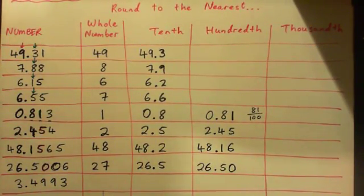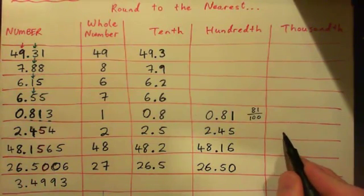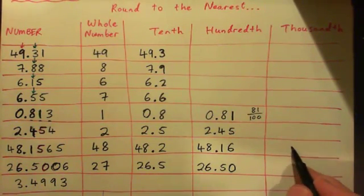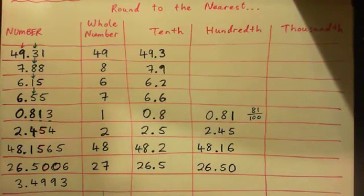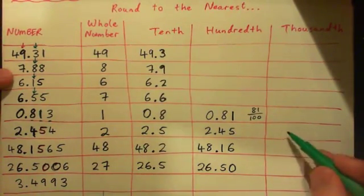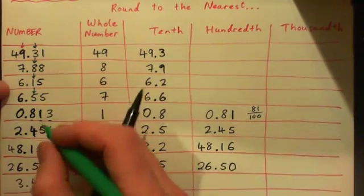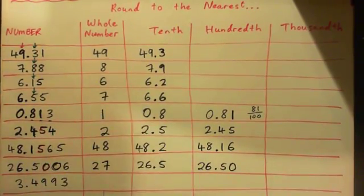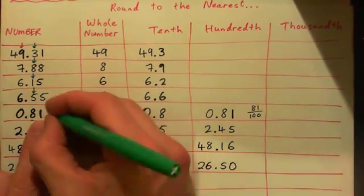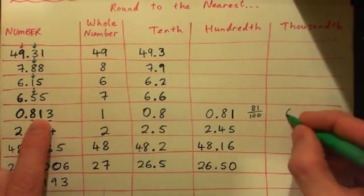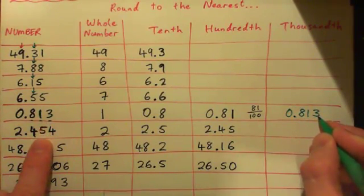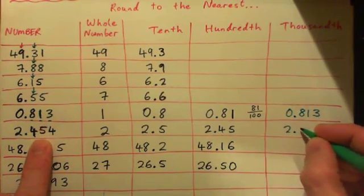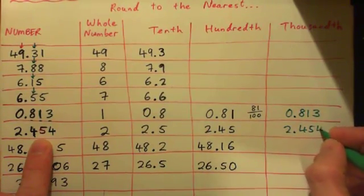So now for fun, we will do this one to the nearest thousandth. Because there's no point doing these other guys — this one already is rounded to the nearest thousandth. It's tenths, units, thousands — it's already rounded to the nearest thousandth. Four, five, four — so if you want to do that, you can.